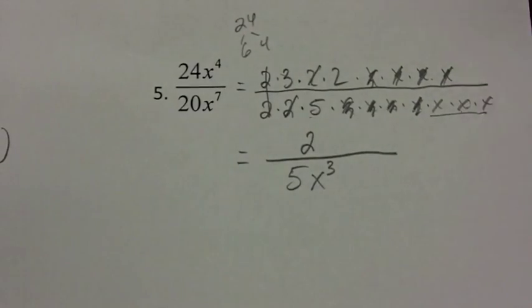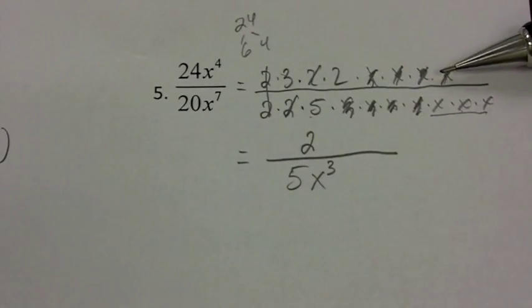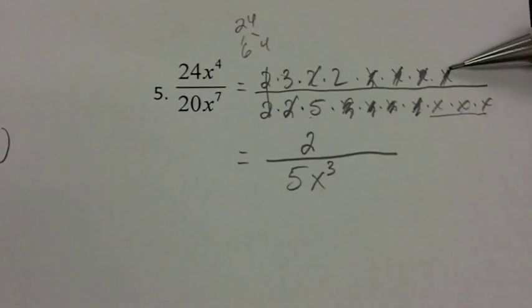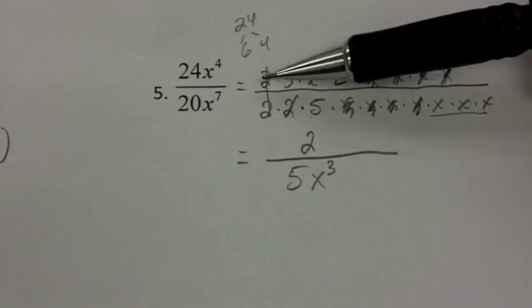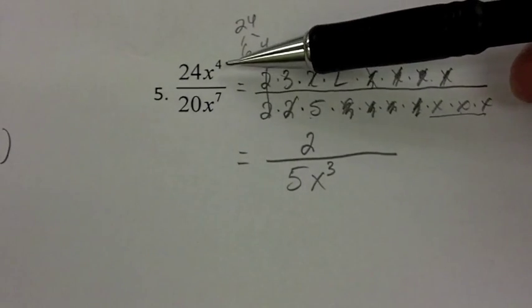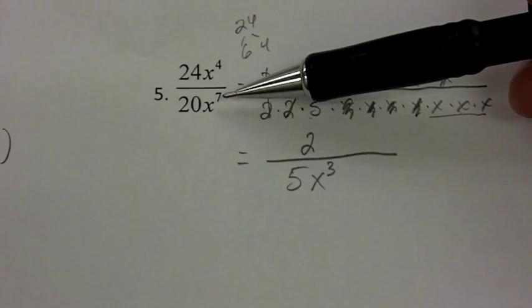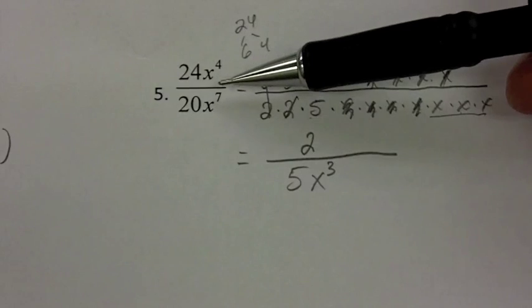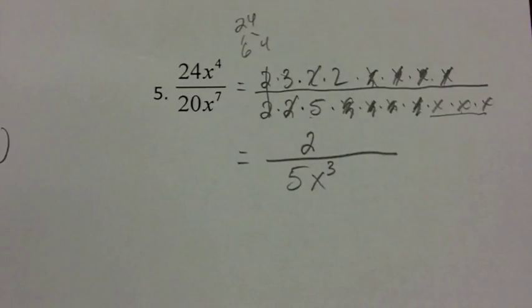Let's double-check those x's. Writing them all out helps you understand what's going on, but a quicker way: I have 4 x's in the top and 7 in the bottom. That tells me when I'm done dividing them out, I'm going to have 3 left in the bottom. So that's a quicker way to get to that answer.